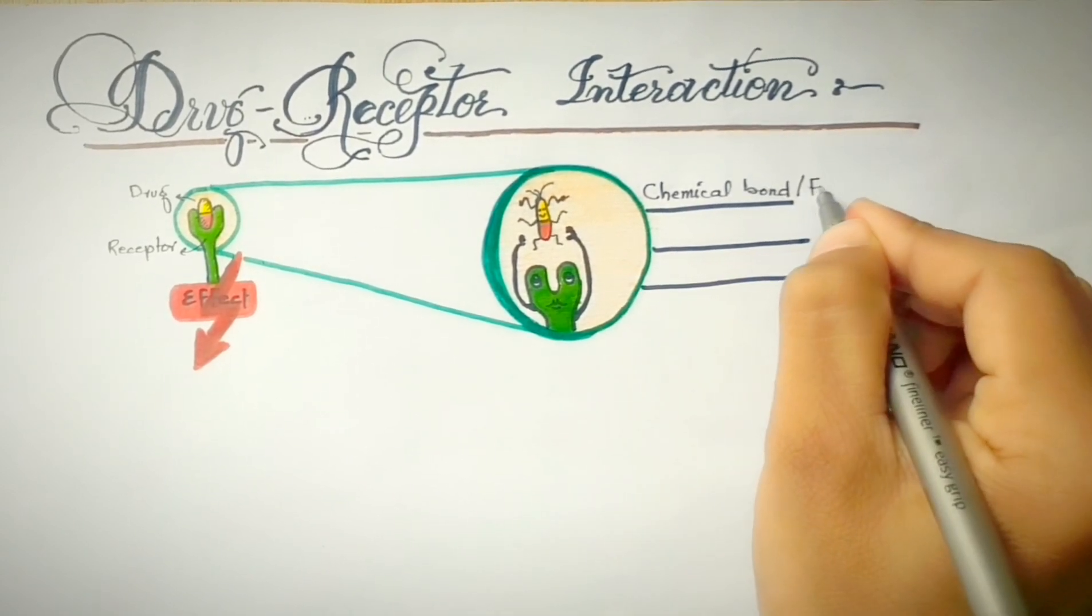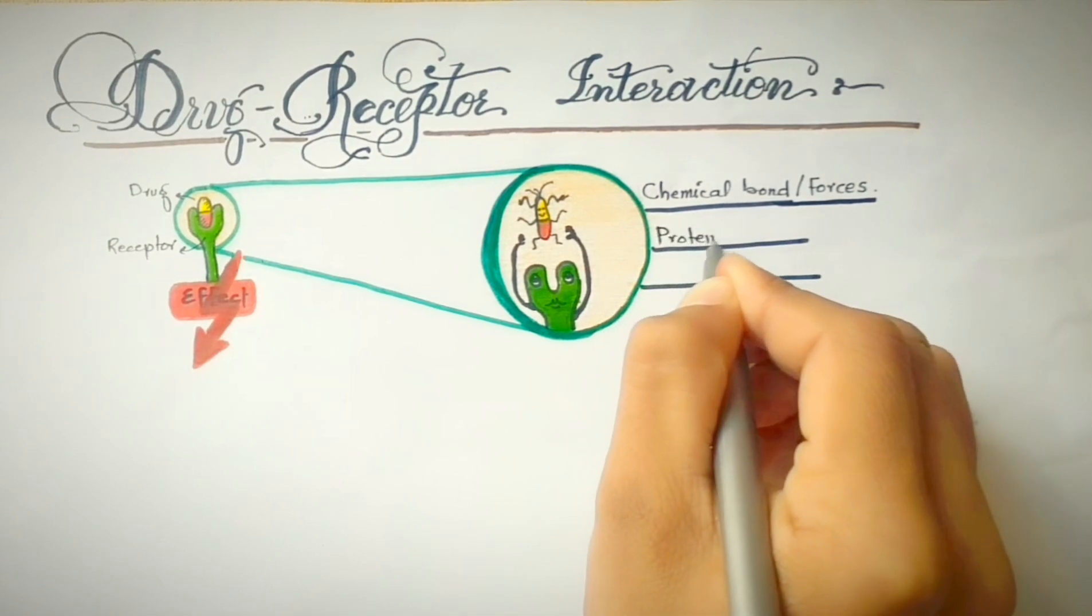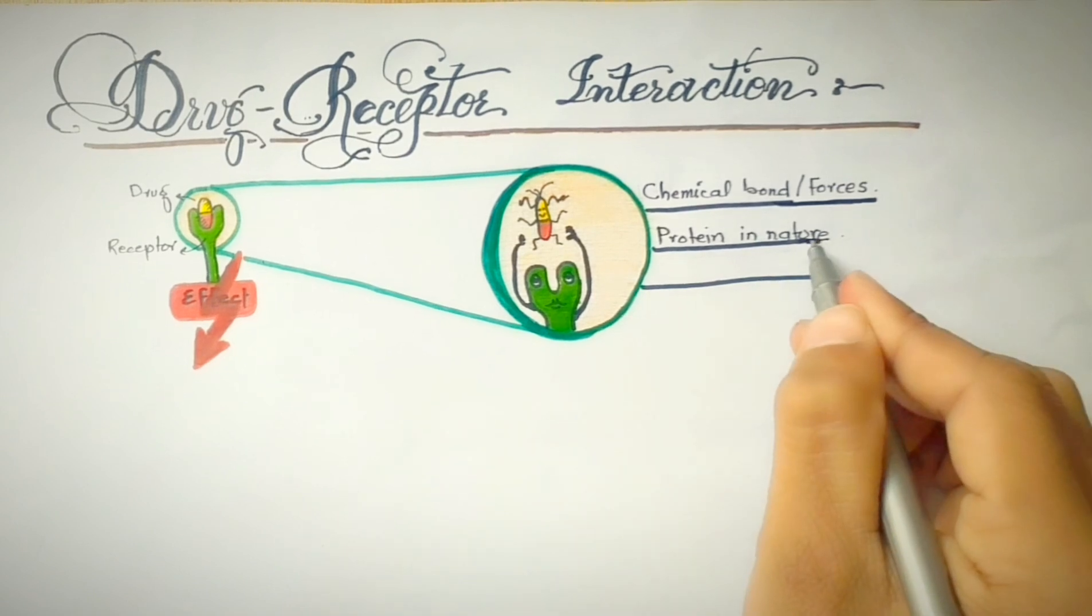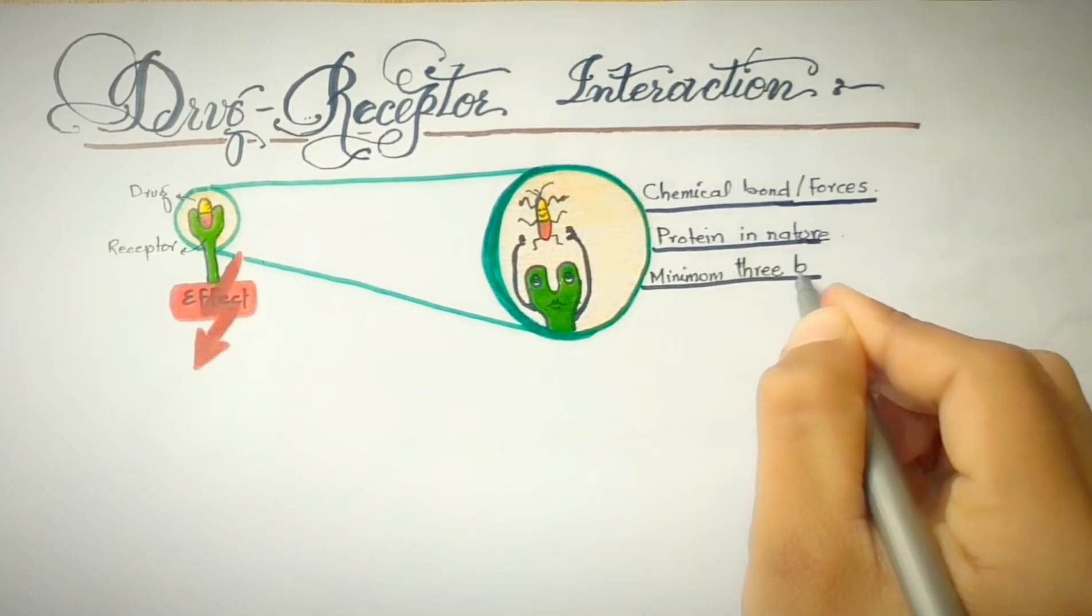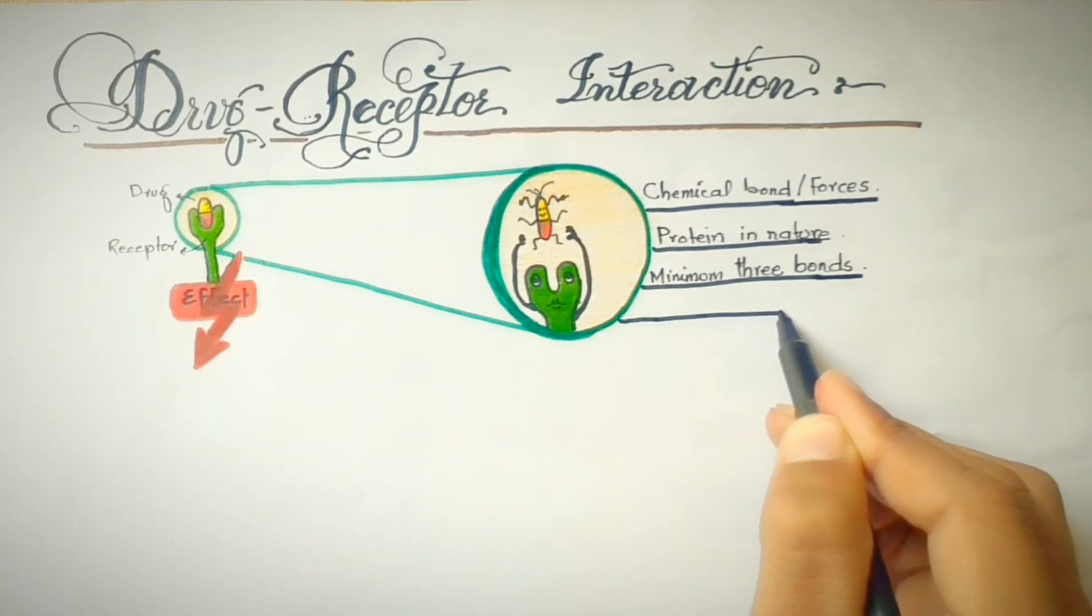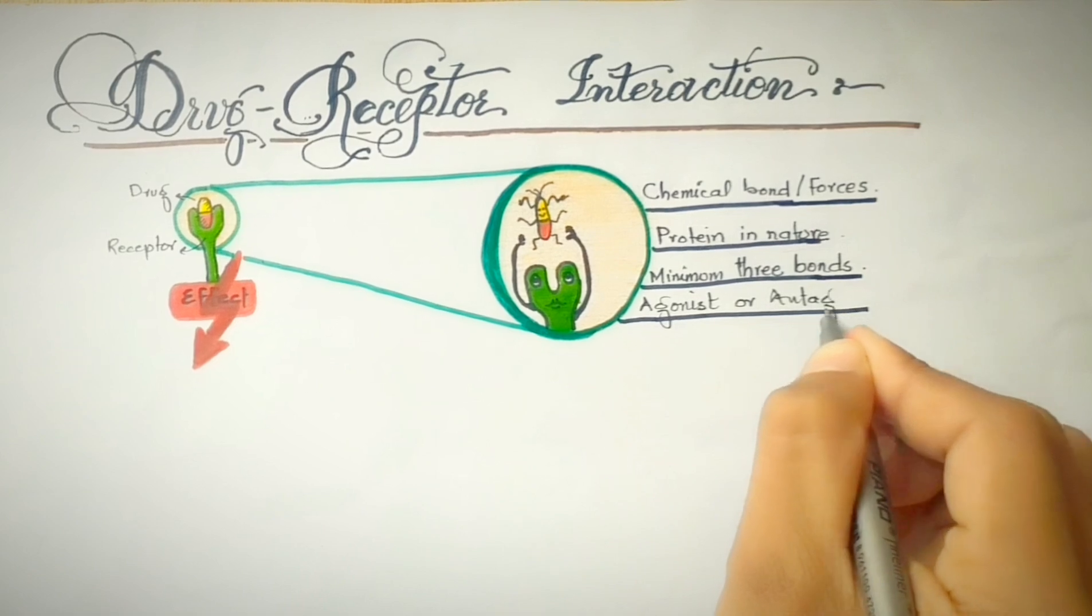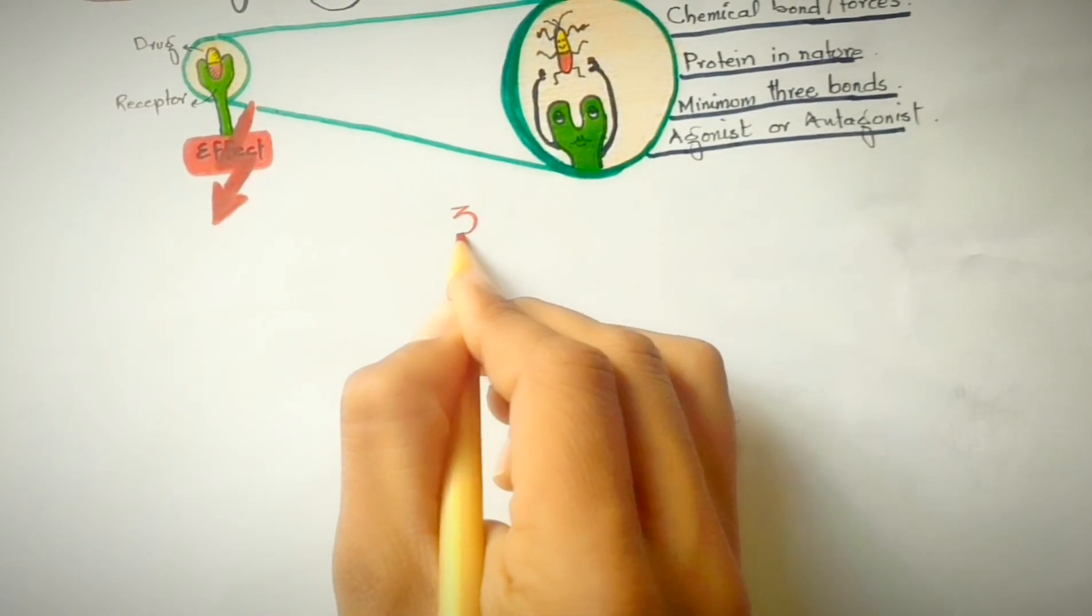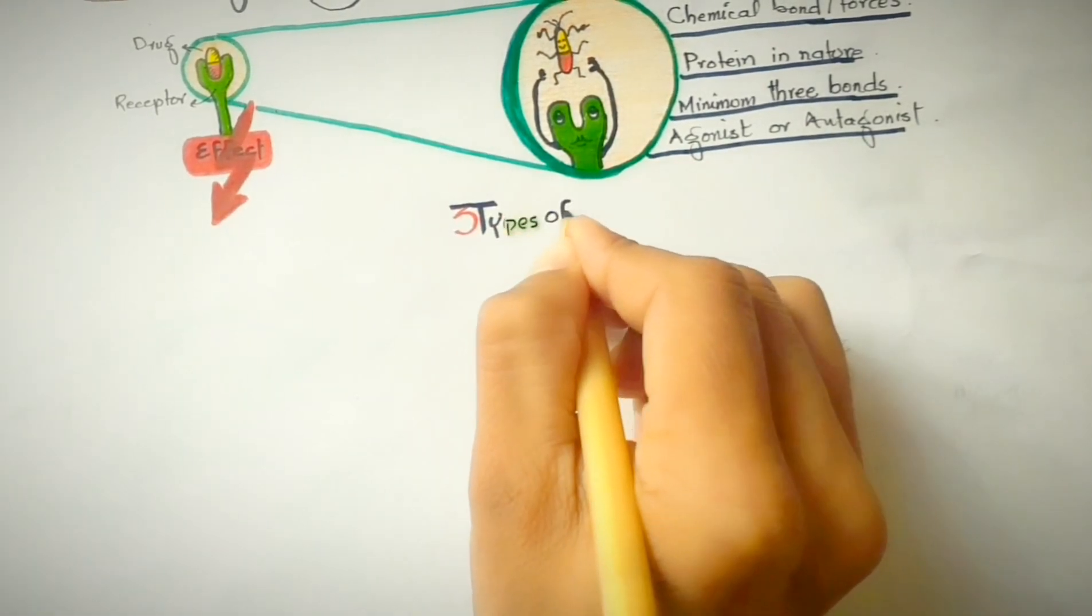For this purpose, different drugs may form various types of bonds with the receptor. The receptors are mostly protein in nature and some studies show that a minimum of three-point attachment of the drug with the receptor is required for its activation. Besides this, drugs with agonistic activity activate the receptor rather than antagonists. There are mainly three types of bonds which a drug forms with the receptor: covalent bond, electrostatic bond, and hydrophobic bond.